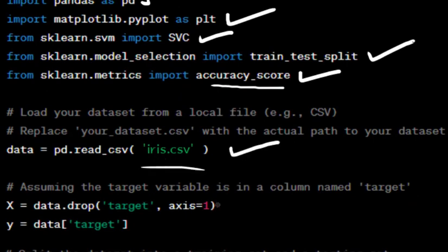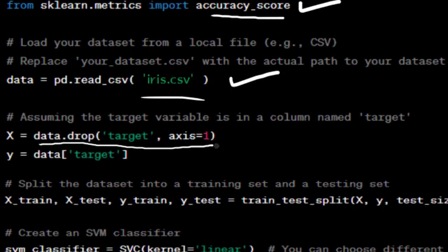We load the dataset from a CSV file named iris.csv. You should replace iris.csv with the actual path to your dataset file if using Python IDE. We assume that the target variable is in a column named target. X is assigned all columns except the target column, representing the feature variables. Y is assigned the target column, representing the target variable we want to predict.